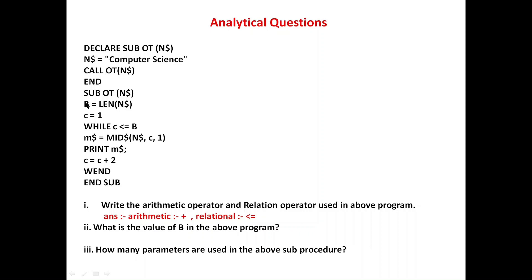What is the value of B in the above program? B = LEN(N$), and N$ stores 'computer science'. The LEN function gives the total number of characters in the string, including spaces. Let's count: c-o-m-p-u-t-e-r (8) + space (1) + s-c-i-e-n-c-e (7) = 16. So the value of B is 16, because the blank space is also counted as one character.